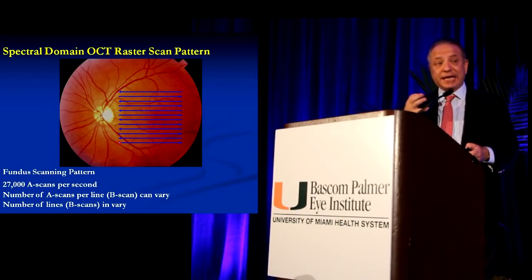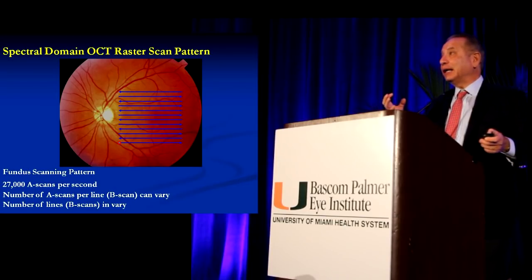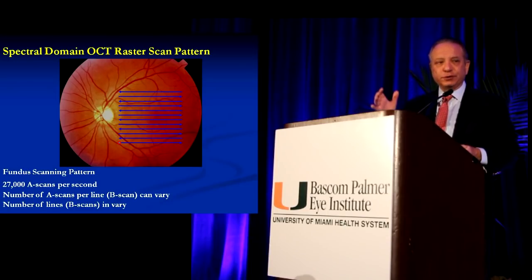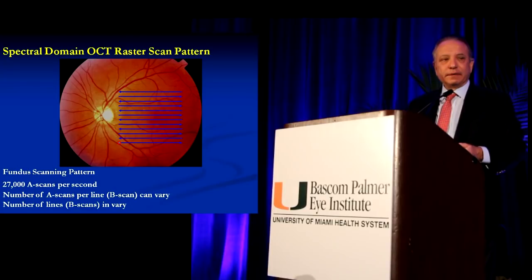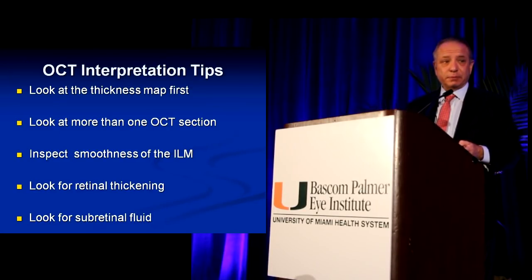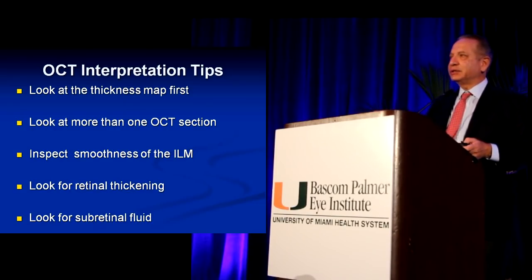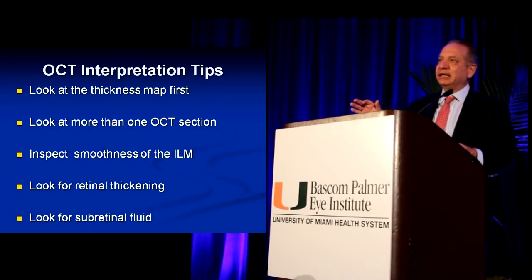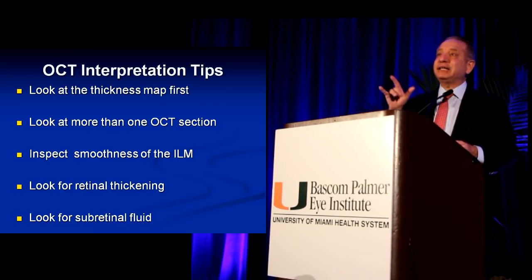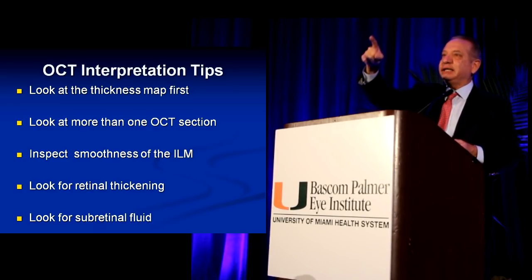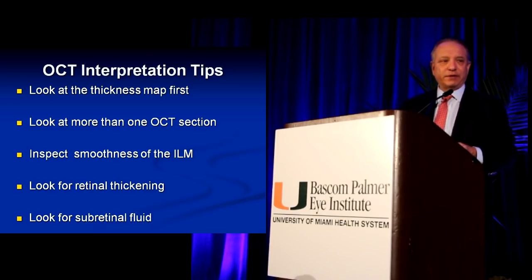This is the way we're scanning now. We're getting a box scan, usually six by six millimeters. Here are tips about interpreting: look at the thickness map first. Look at more than one OCT section — don't look at just one image and make a conclusion, particularly if the thickness map is abnormal. If the thickness map is abnormal, you need to do a much more thorough evaluation.